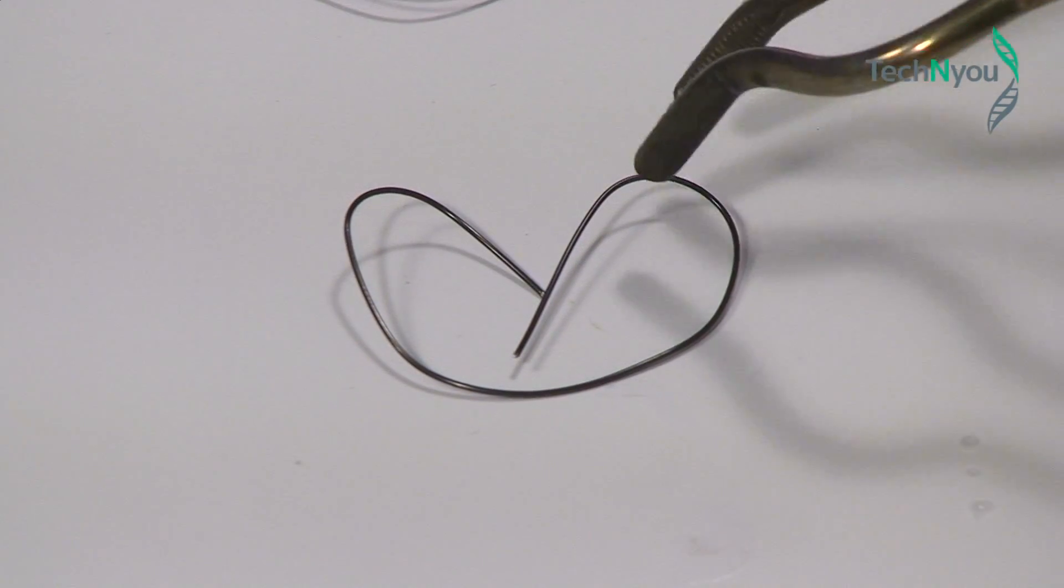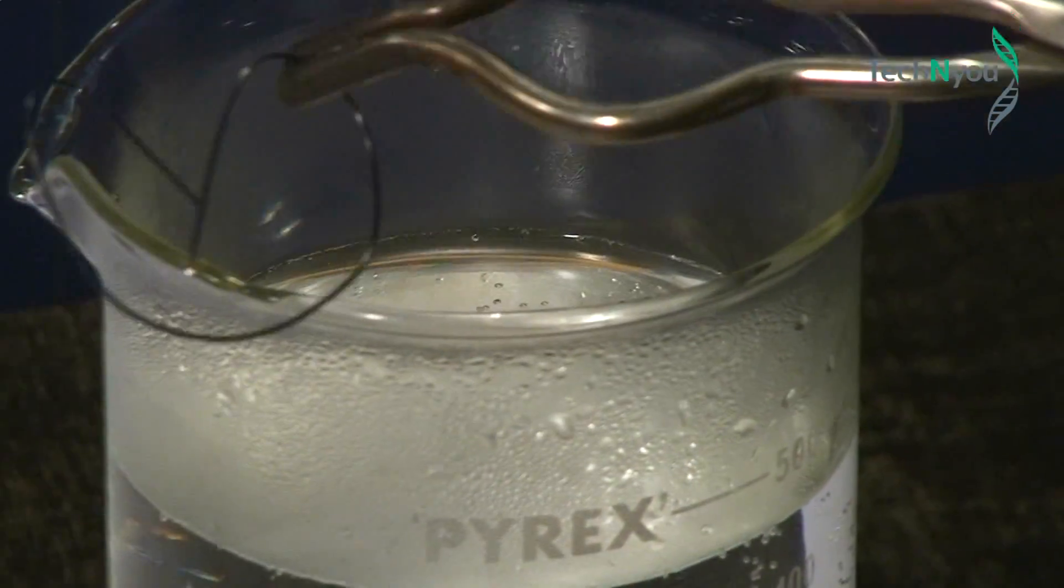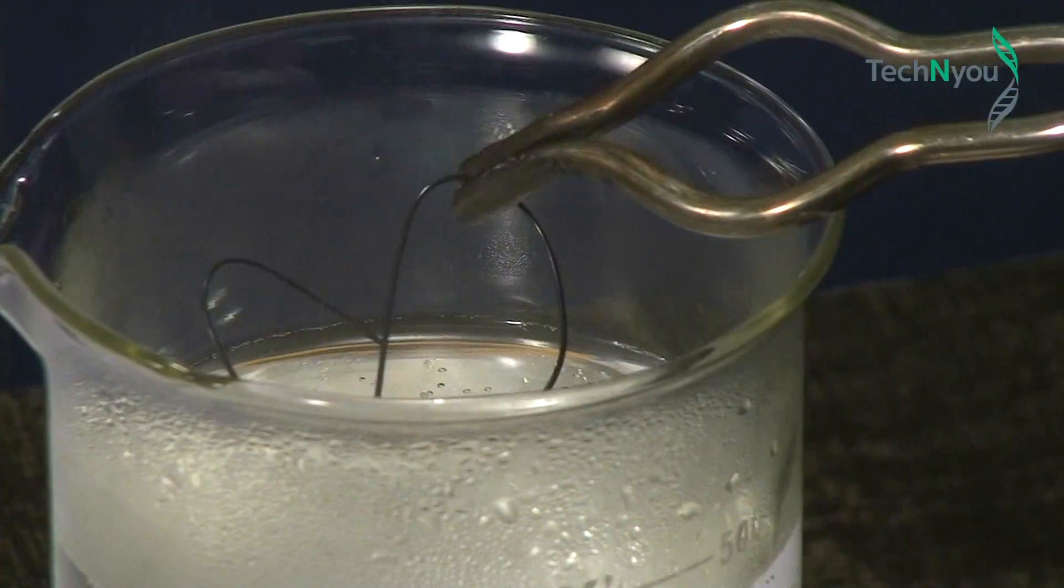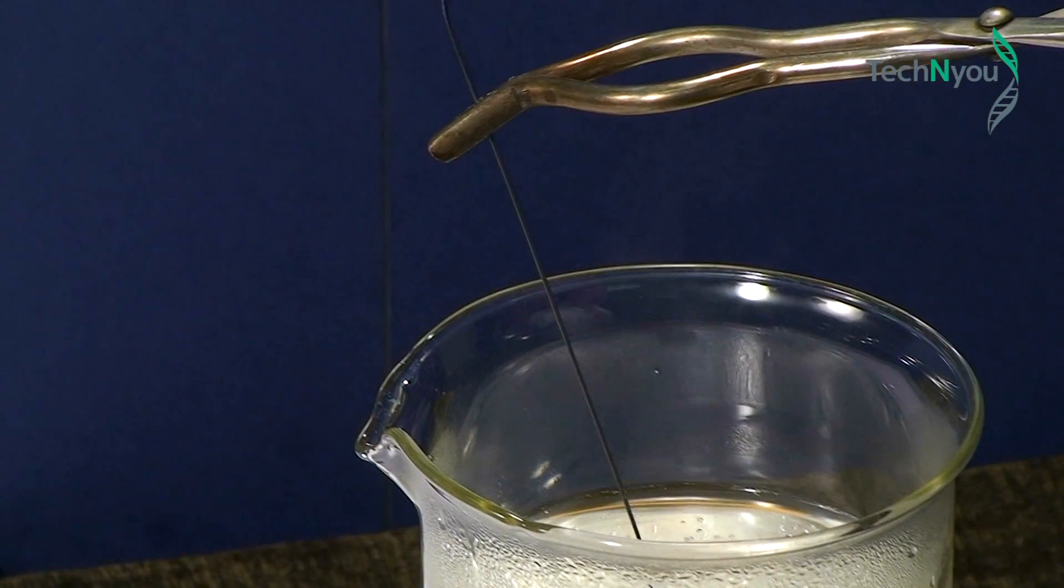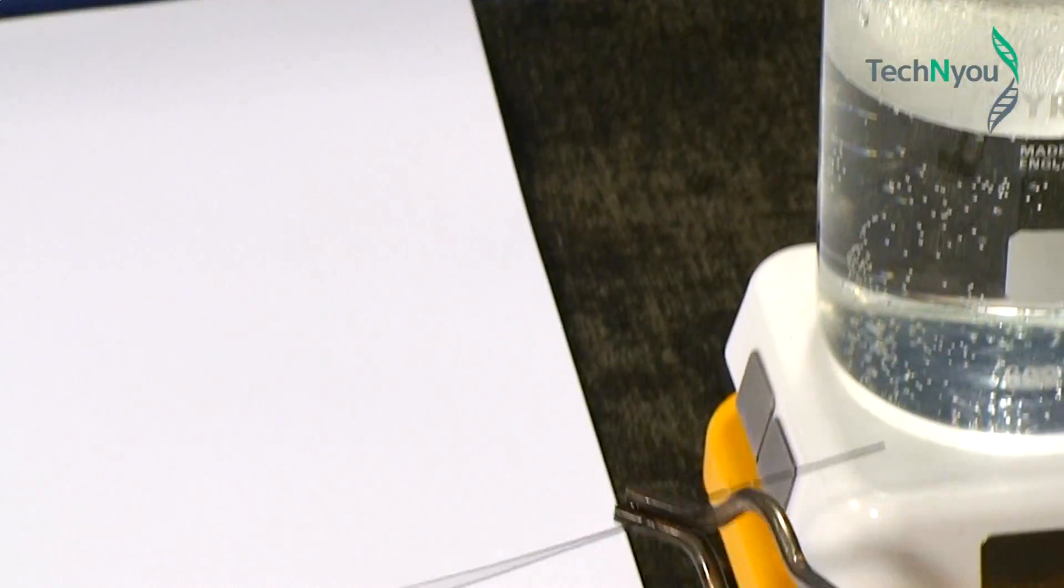If Nitinol wire is given a certain shape, it remembers that shape. It can be twisted or deformed into new shapes at lower temperatures, but if it is reheated to its remembering temperature, it will quickly recover its remembered shape.